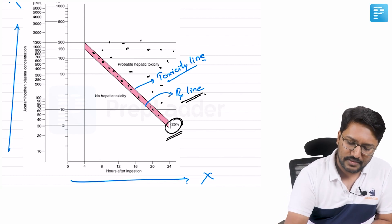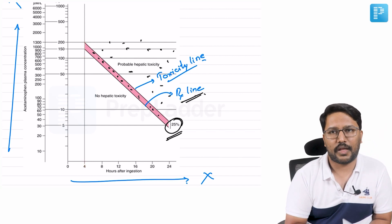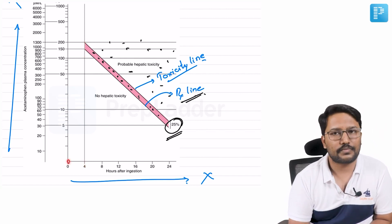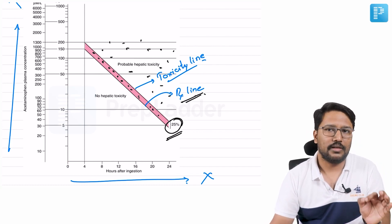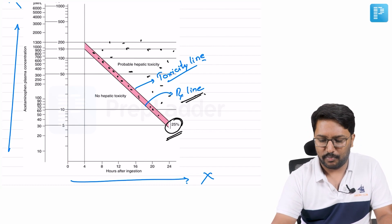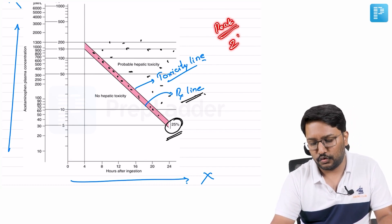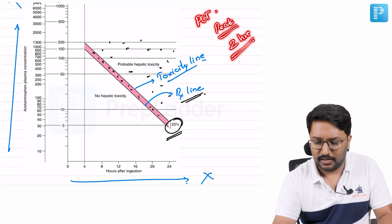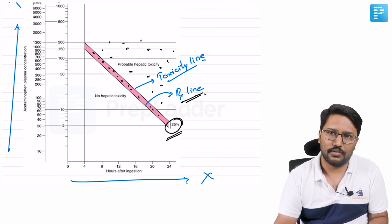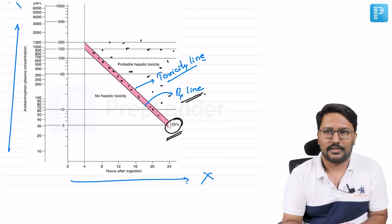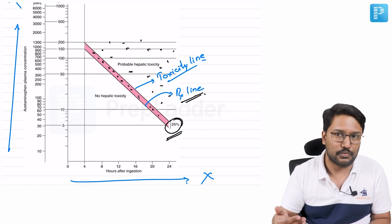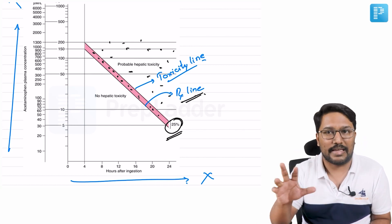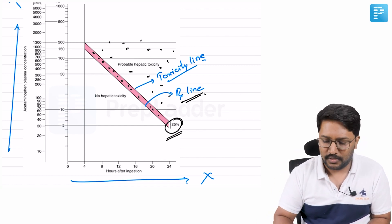The nomogram line is missing before four hours — it starts only after four hours of consumption. The reason is that when paracetamol is consumed at therapeutic doses, the peak plasma level is usually reached around two hours, as we personally experience: headache relief comes about two hours after taking a tablet.